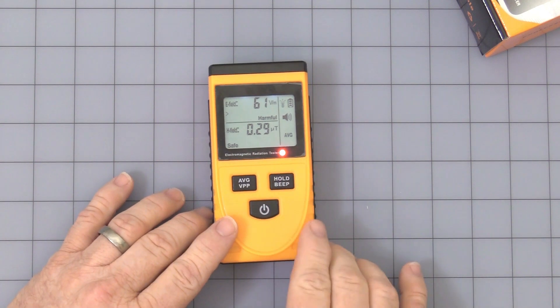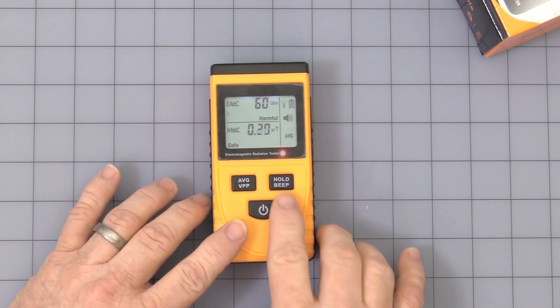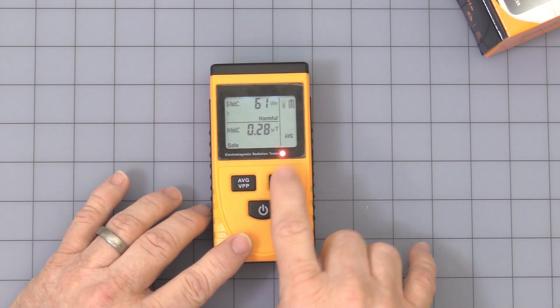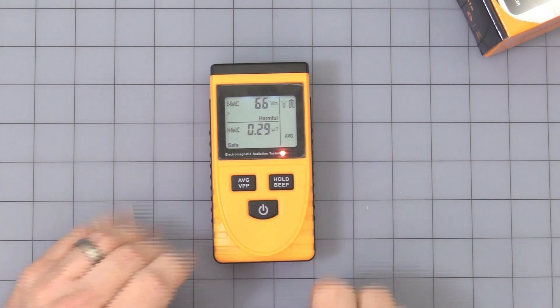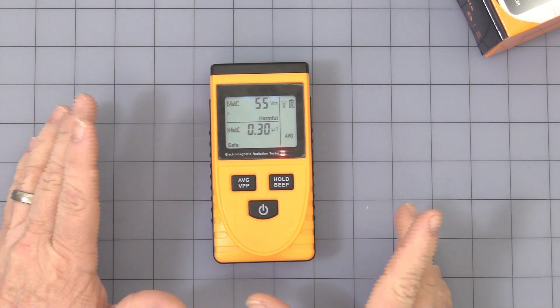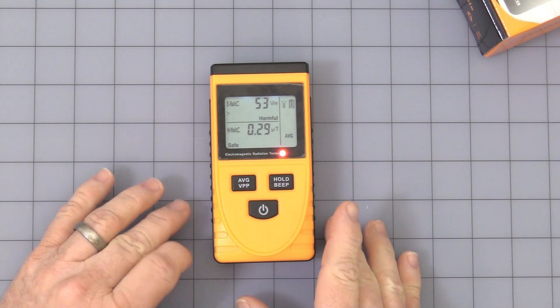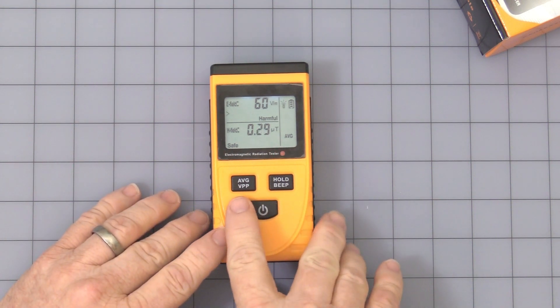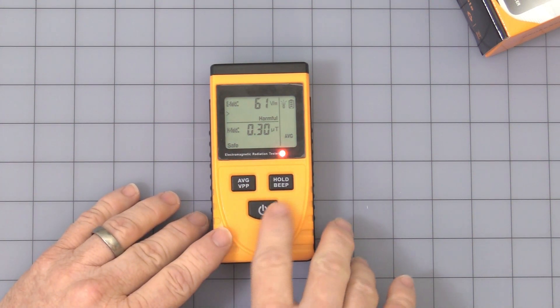To get to the average, press and hold it down to silence, but the LED will always keep flashing when it's above the 40 volt per meter range. Let's see if you were to press the average.